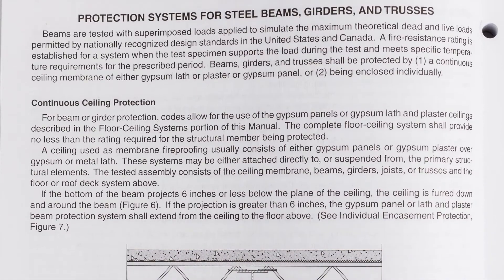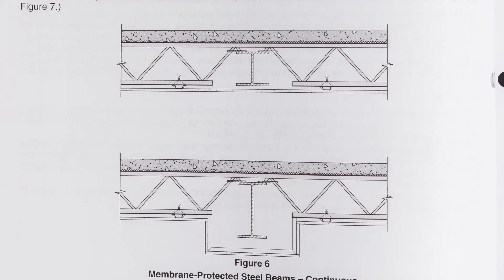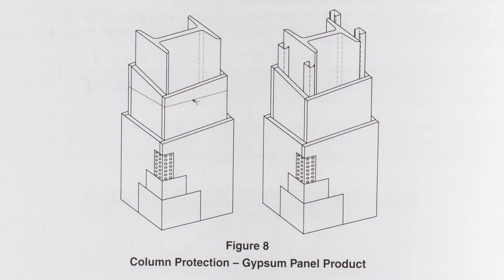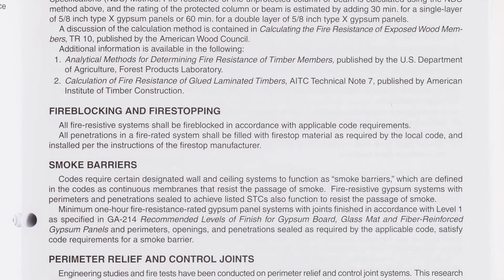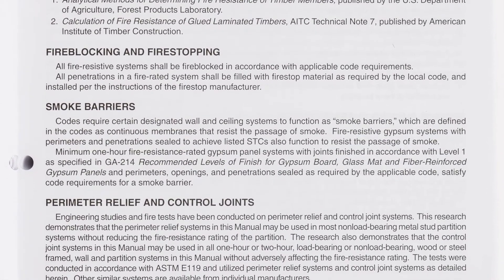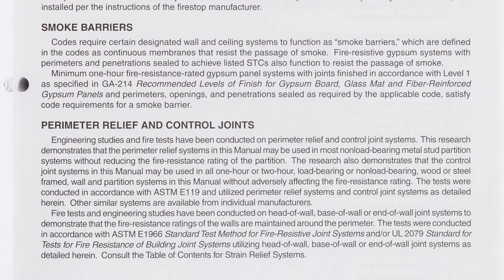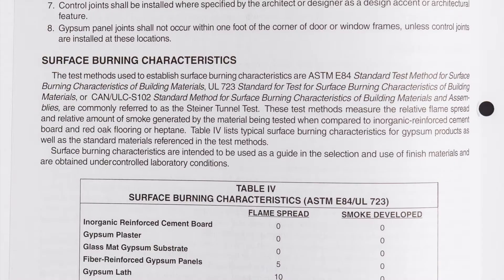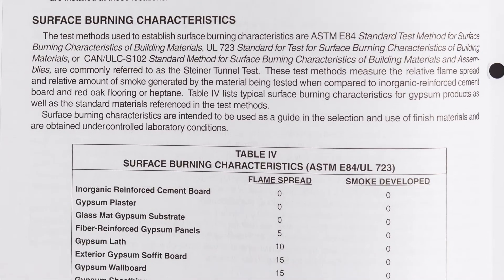Section 2 further covers protection systems for steel beams, girders, and trusses; protection systems for steel columns; protection of wood columns and beams; fire blocking and fire stopping; smoke barriers; perimeter relief and control joints; and surface burning characteristics.